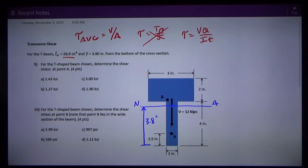And once again, we're thinking about the formula that we're dealing with: tau is VQ over IT. Okay, so we note on the section that the shear force is given to us as 12 kips. That's another important piece of information.